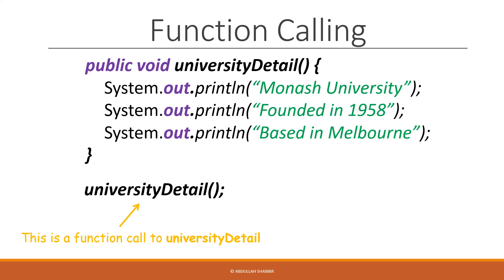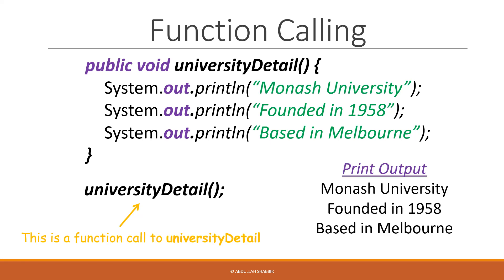And this looks sort of like a call to our println function. Only println was attached to our system.out screen output, but most of the functions that we define in this lesson will stand on their own. So calling this function prompts the set of code contained in our UniversityDetail function definition to run, and will print out the three lines that we expect. It's important to note that calling and defining a function are done separately.